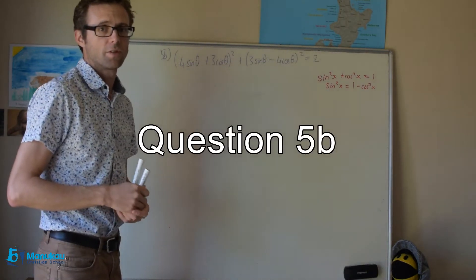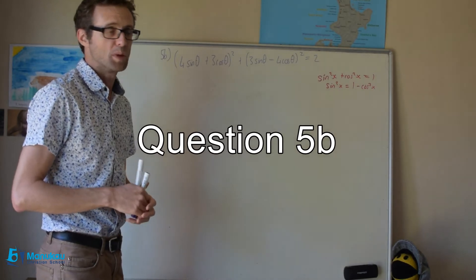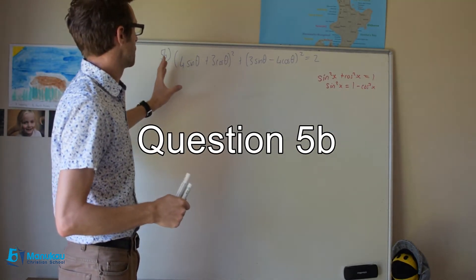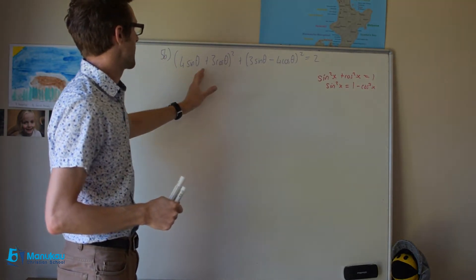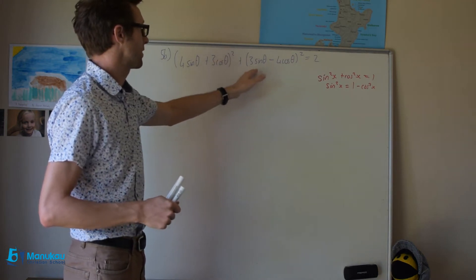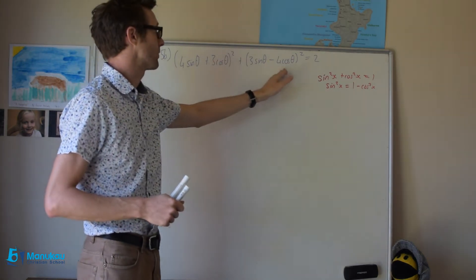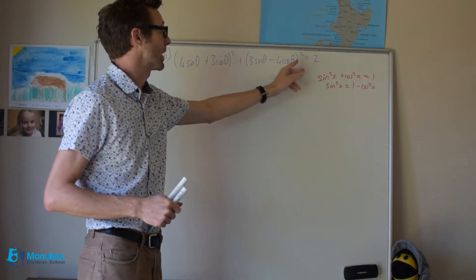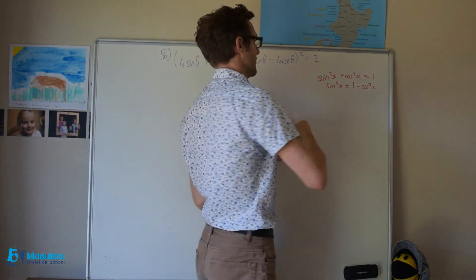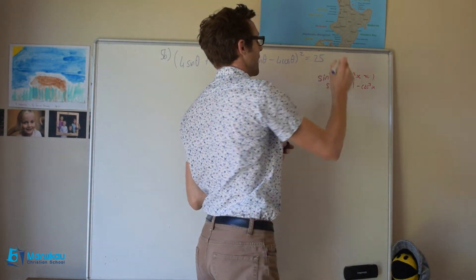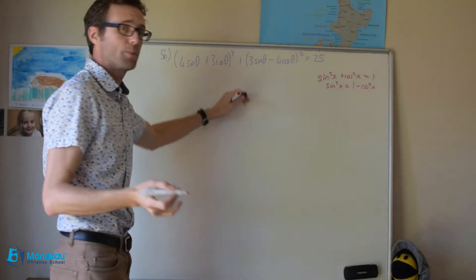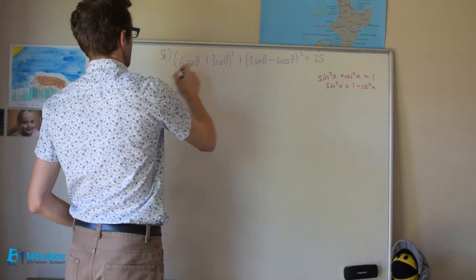Now I'm going to move to question 5b, and we're trying to prove that bracket four sine theta plus three cosine theta, all squared, plus bracket three sine theta minus four cosine theta, all squared, is equal to 25. So how are we going to prove this? The first step is to expand out the brackets.